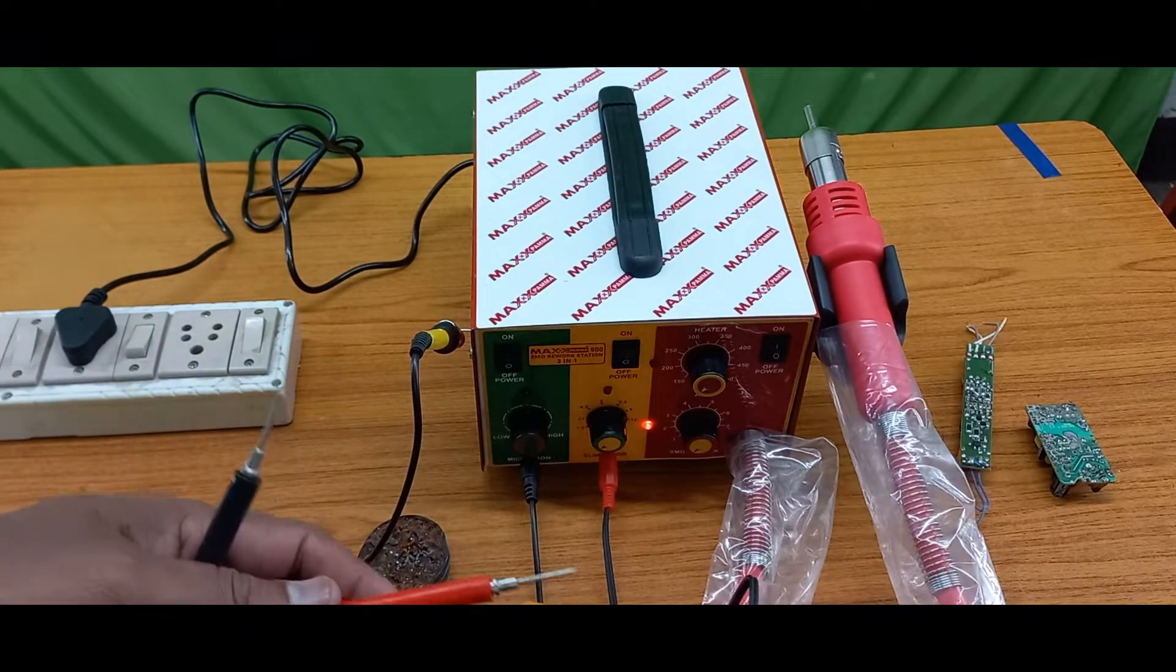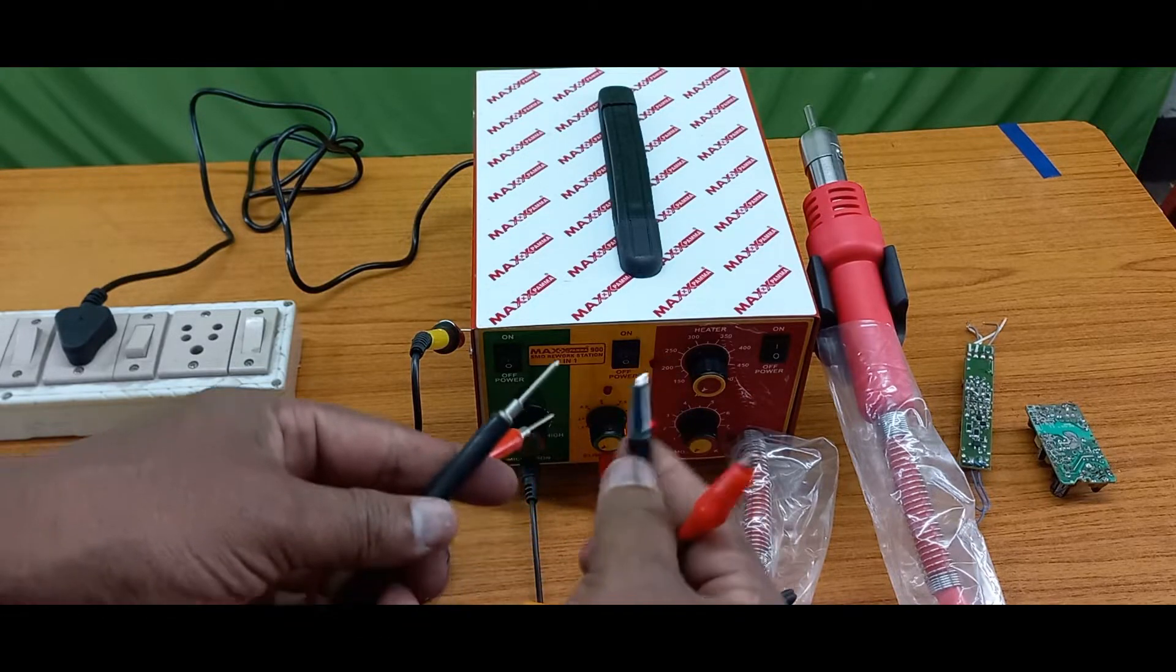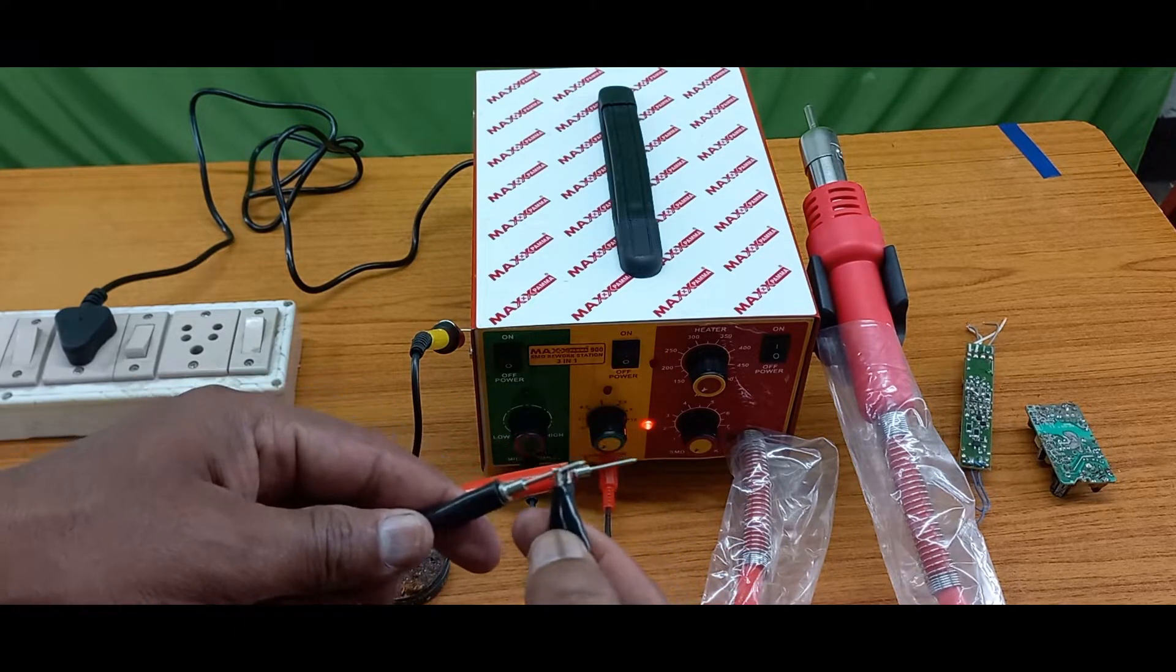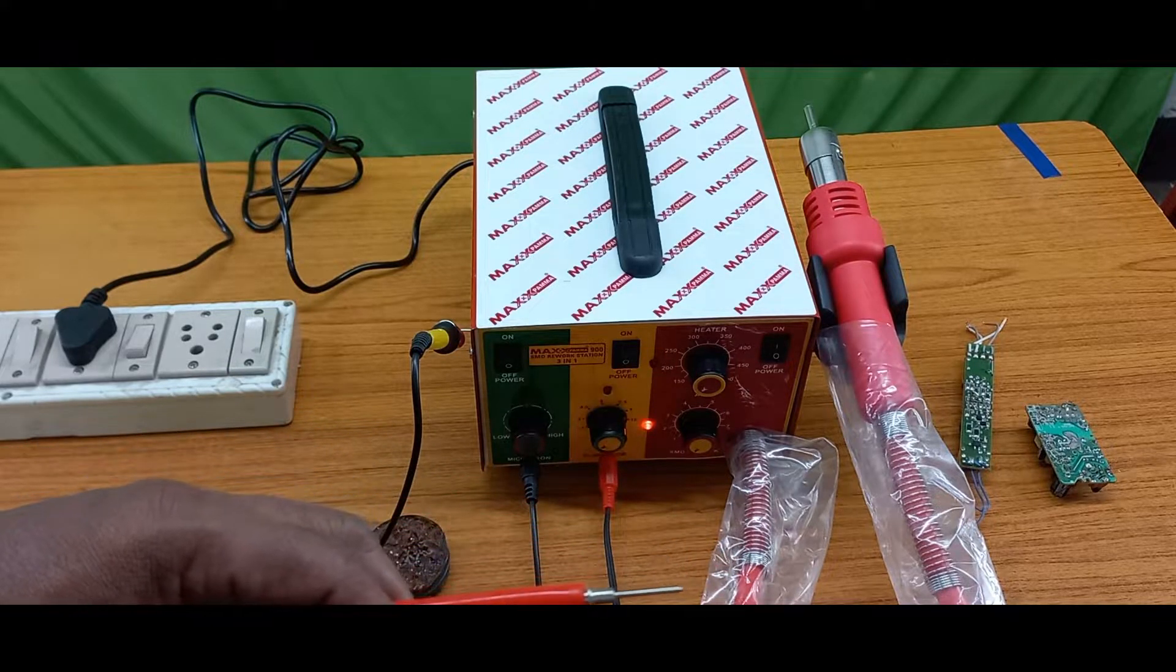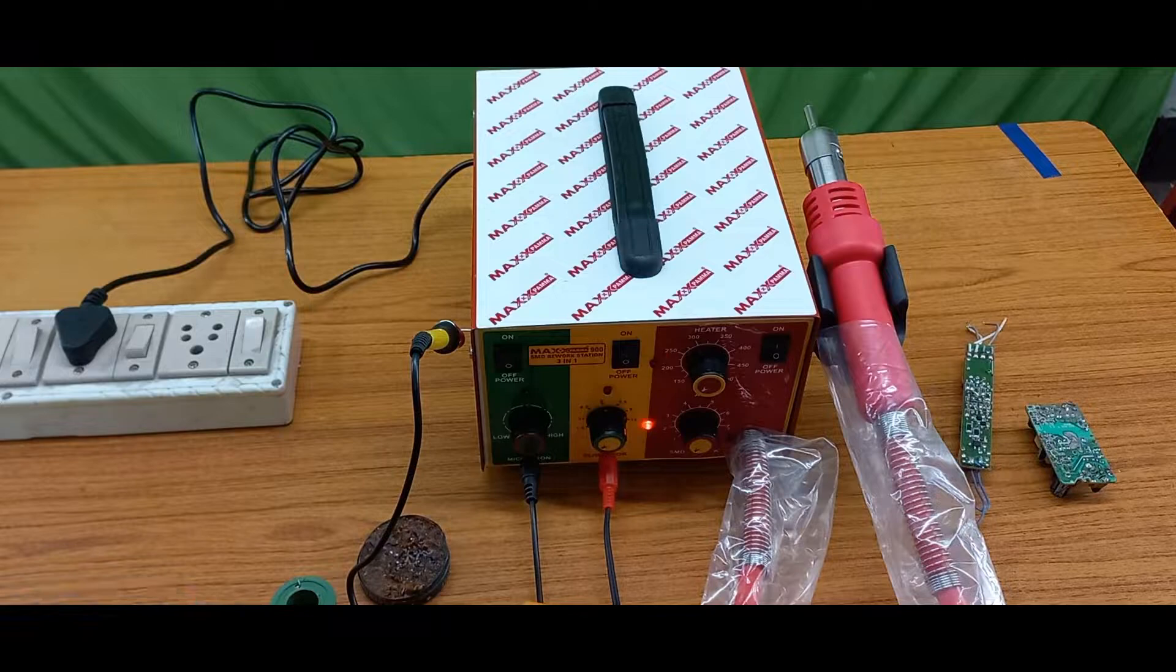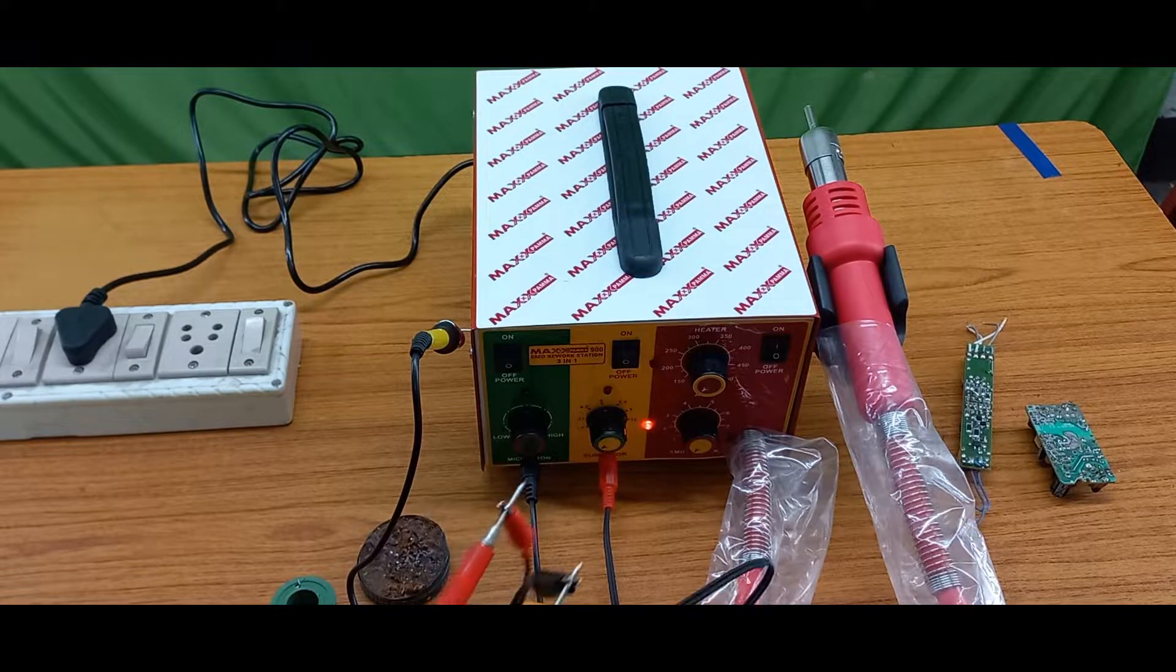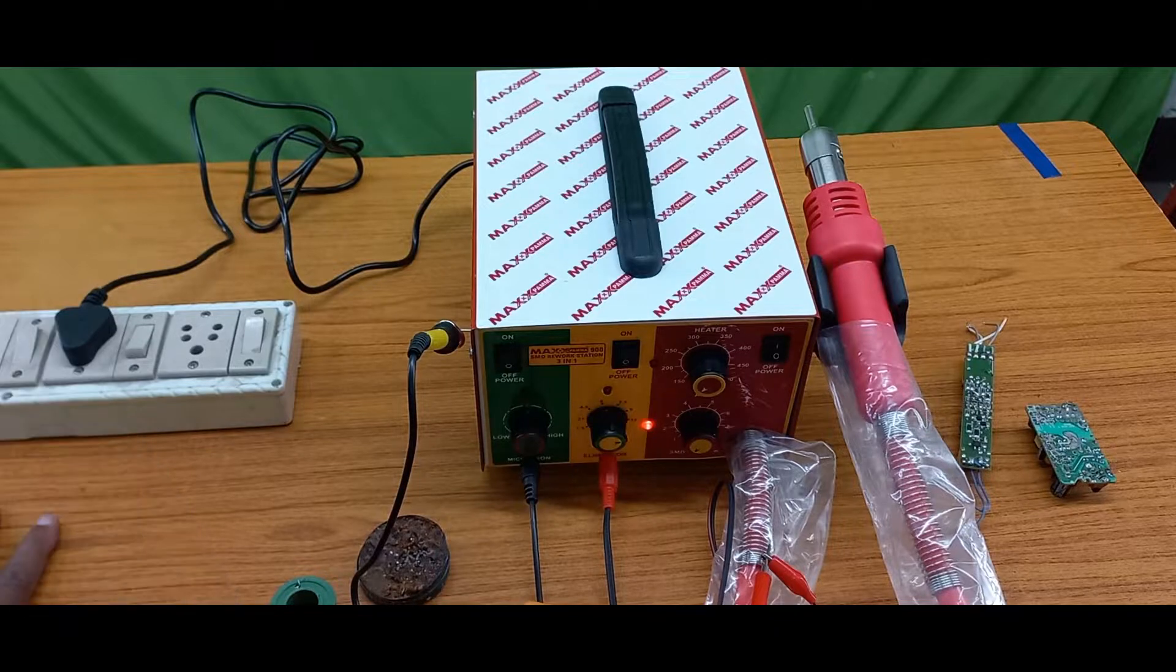After that, these crocodile clips are connected. Black is black, red is red. Now I turn on DC power supply. Now I will show you.